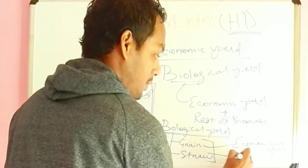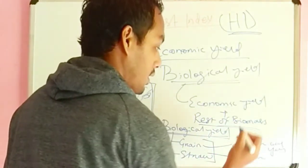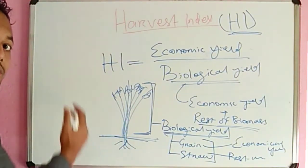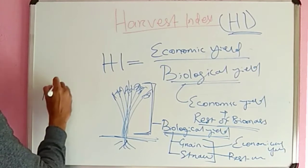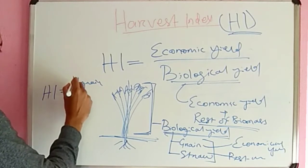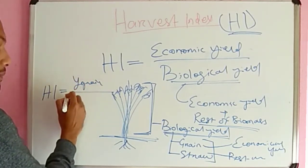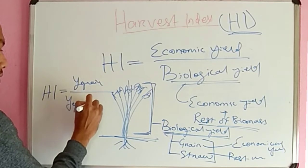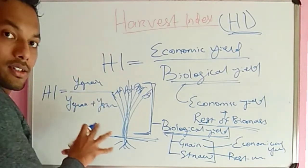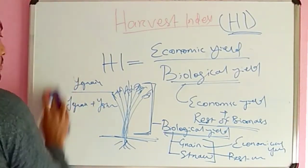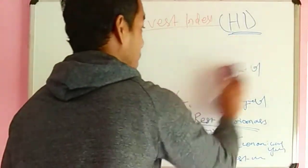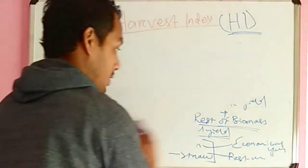Whenever we calculate harvest index of rice, we calculate it like this: yield of grain divided by (yield of grain plus yield of straw). This is the harvest index formula for cereals.